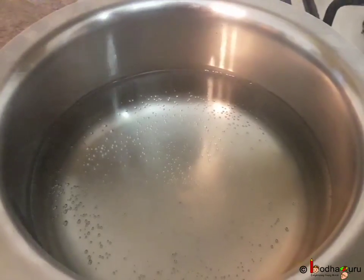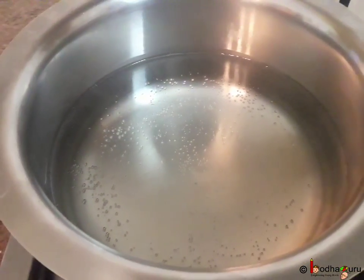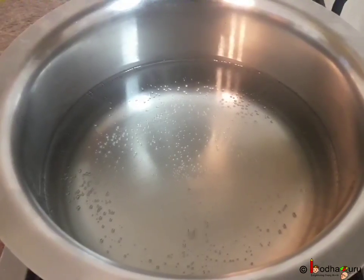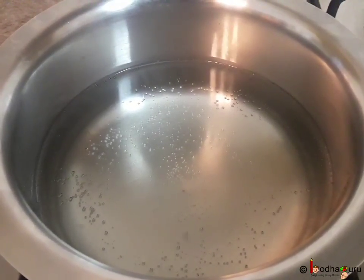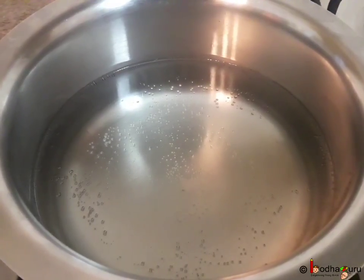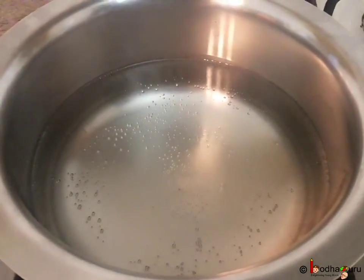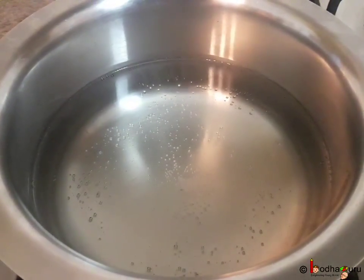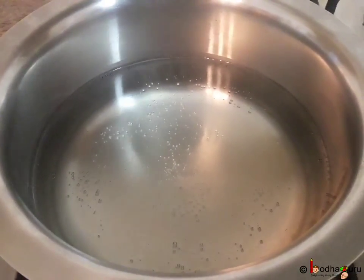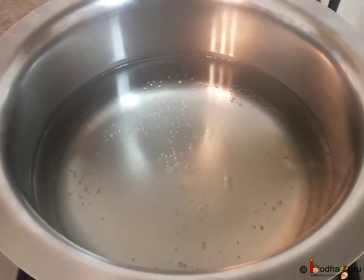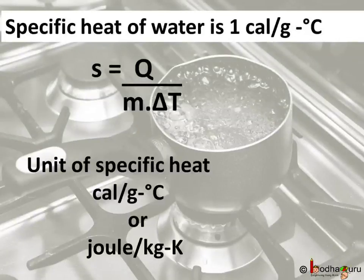Now, you may wonder why the specific heat is important. The specific heat of water is 1 calorie per gram degree Celsius. This means 1 calorie of heat is required to change the temperature of 1 gram of water by 1 degree Celsius. So, the unit of specific heat is calorie per gram degree Celsius or joule per kilogram Kelvin. The SI unit of specific heat is joule per kilogram Kelvin, which is the amount of heat energy required to raise the temperature of 1 kilogram of the substance by 1 Kelvin.